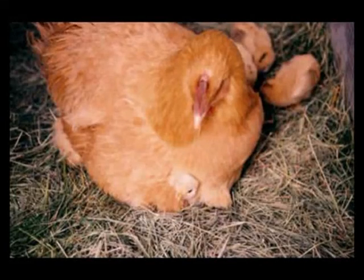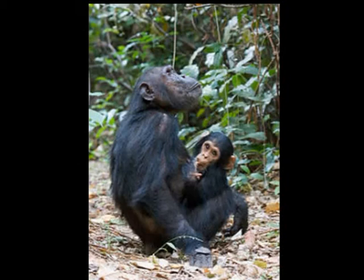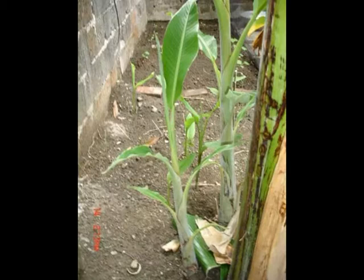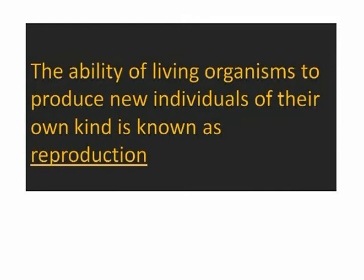Let's see how animals reproduce. Chickens hatch eggs. Goats and other mammals give birth to live ones. Plants also reproduce new ones. The ability of living organisms to produce new individuals of their own kind is known as reproduction.